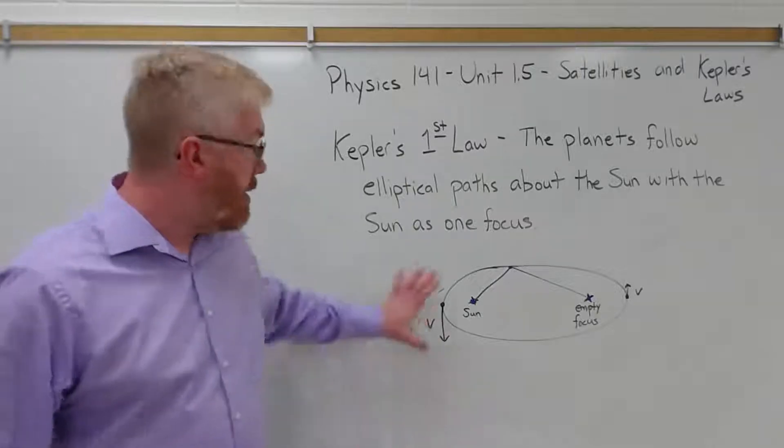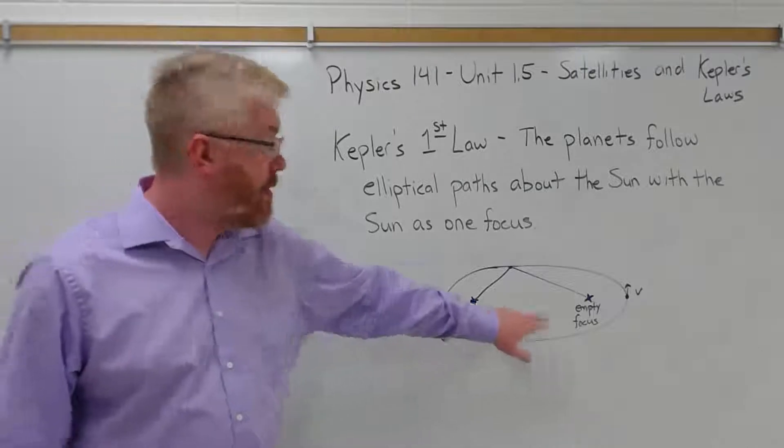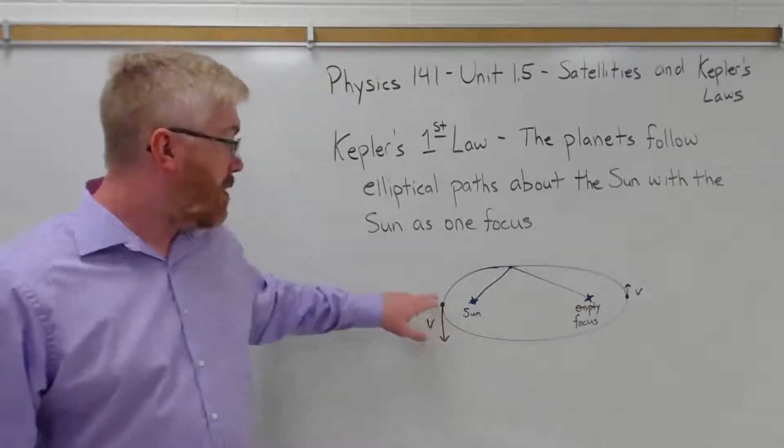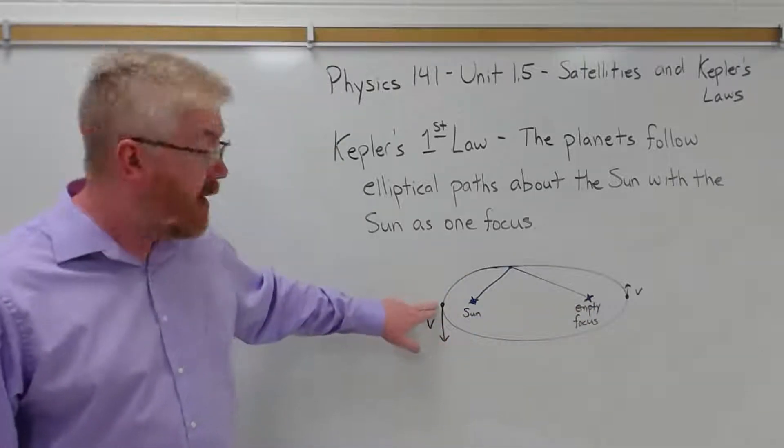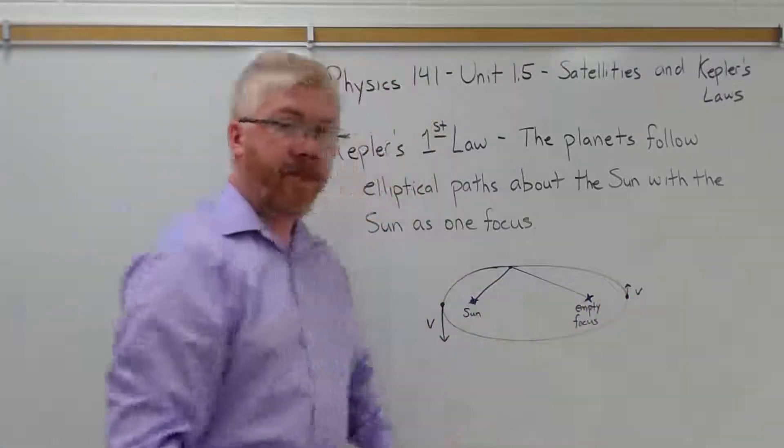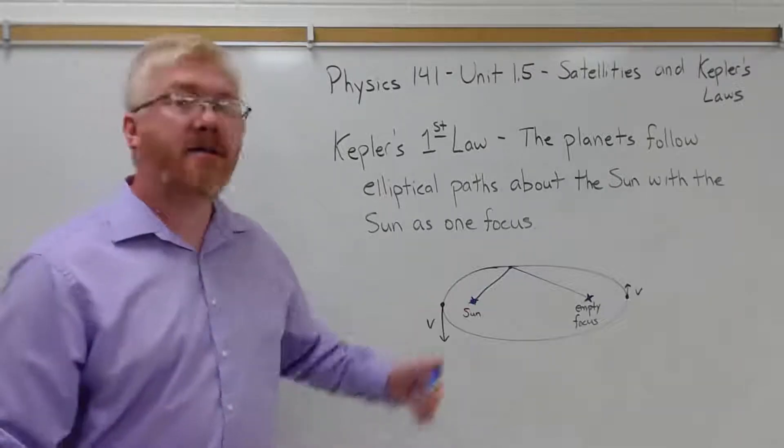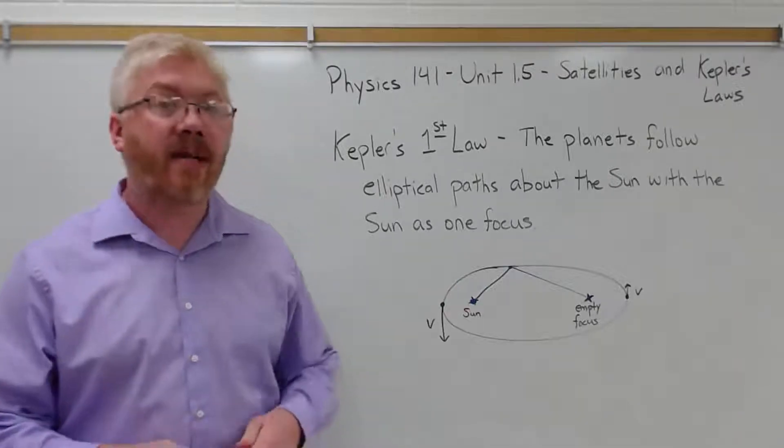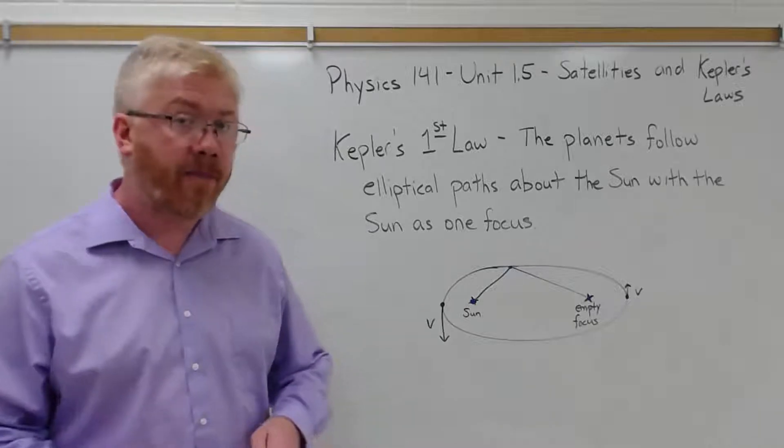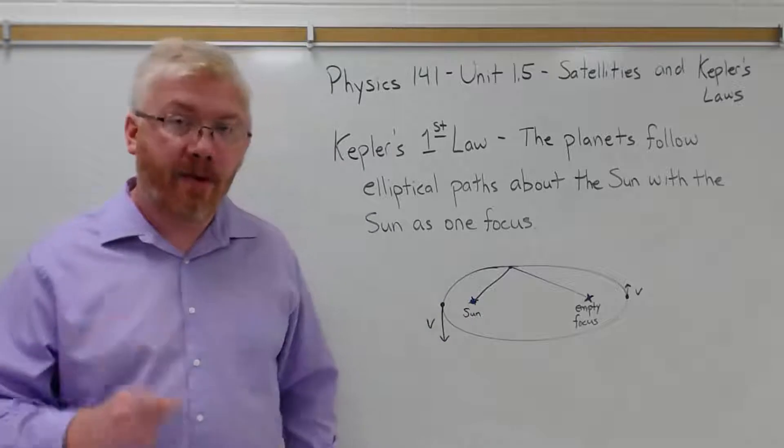Now, the planets are not nearly as elliptical as shown here, where the Sun is here on the left, this is the empty focus. So sometimes this fictional planet is very close to the Sun, sometimes it's very far away. Comets have similar orbits to this, like Halley's Comet. Planets are more circular. In fact, Venus is almost a perfect circle.